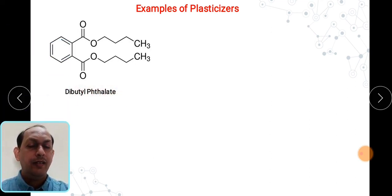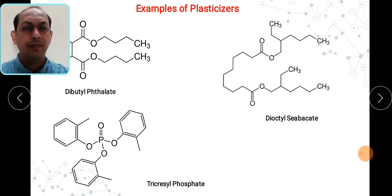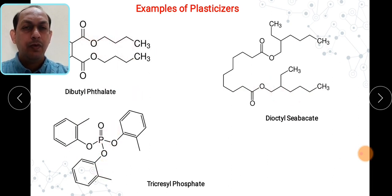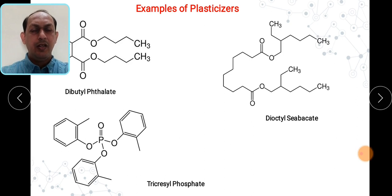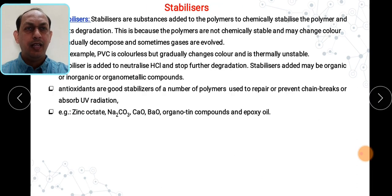Generally, di-butyl phthalate is a very well known plasticizer being added. The next one is di-octyl sebacate, which is added during the process of polymerization as a plasticizer. Then tricresyl phosphate — if you see all these components, they are esters, including phosphoric esters. Other plasticizers can be paraffin oil, glycerol, etc., which can also be used.